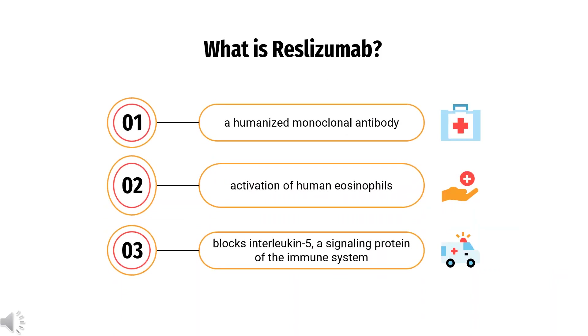What is Reslizumab? What class of drug is Reslizumab? Reslizumab is a humanized monoclonal antibody against human interleukin-5.